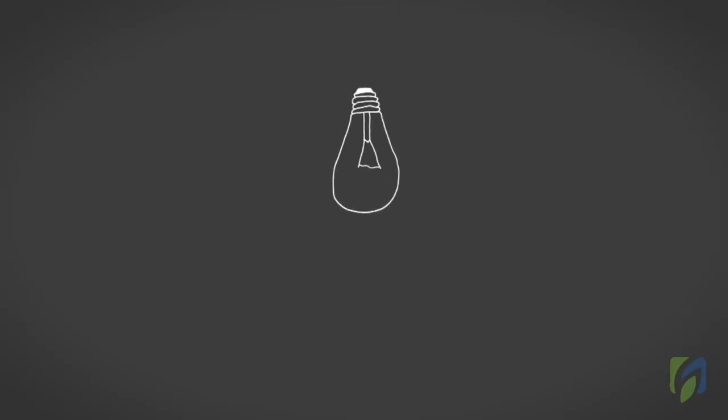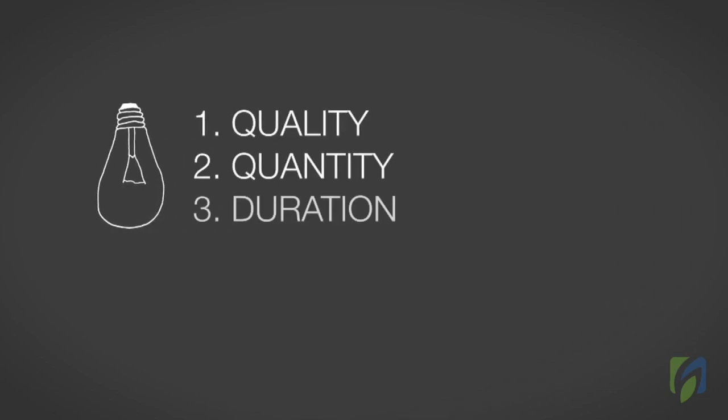Light is one of the environmental factors that affect plant growth. There are three principal characteristics of light that affect plant growth: quality, quantity, and duration. This video will focus on light quantity.